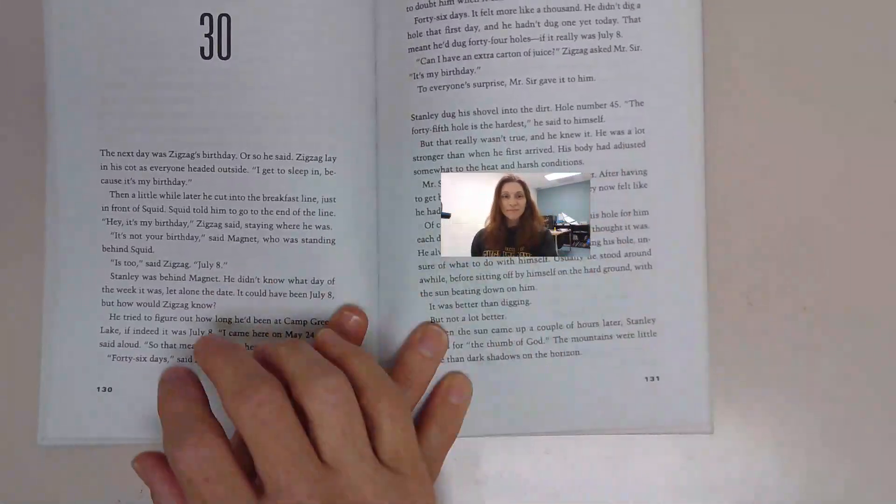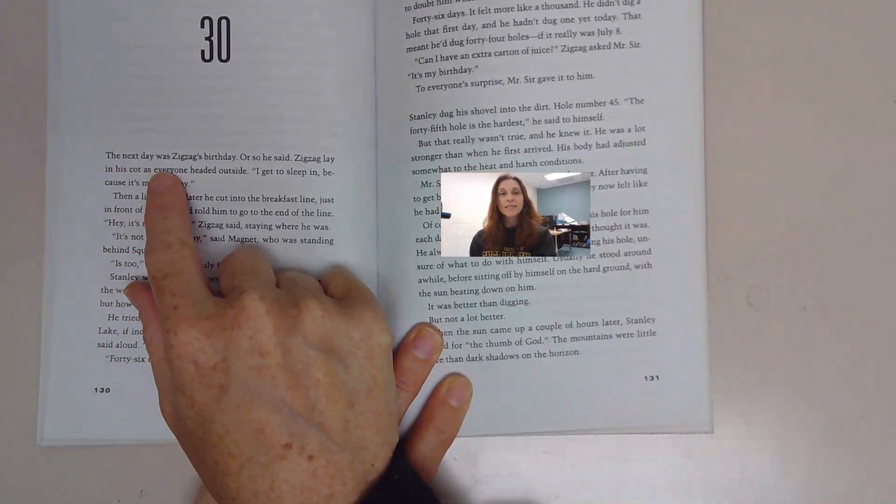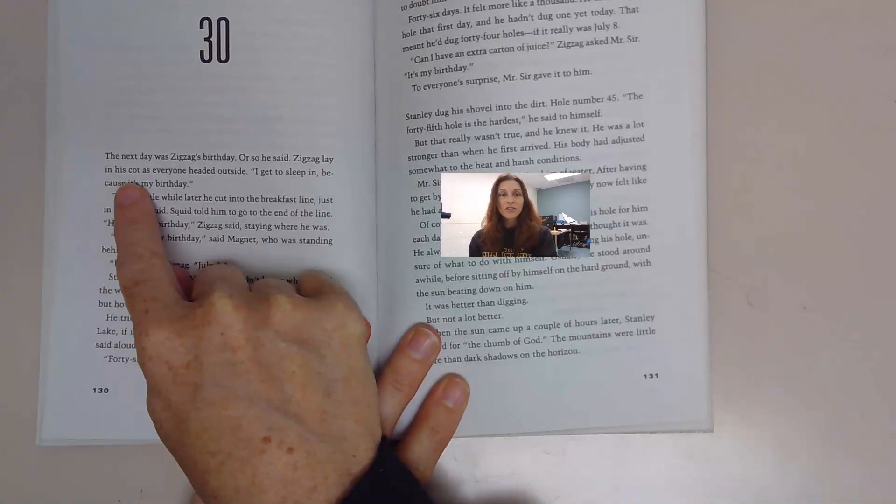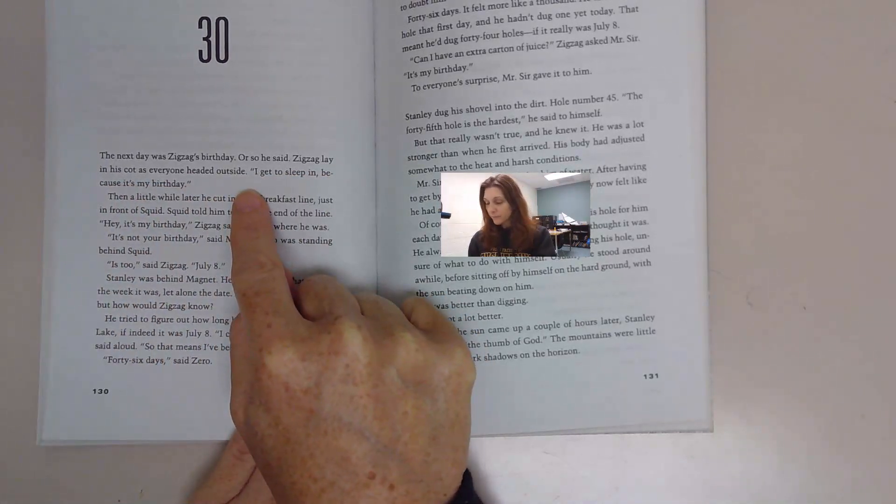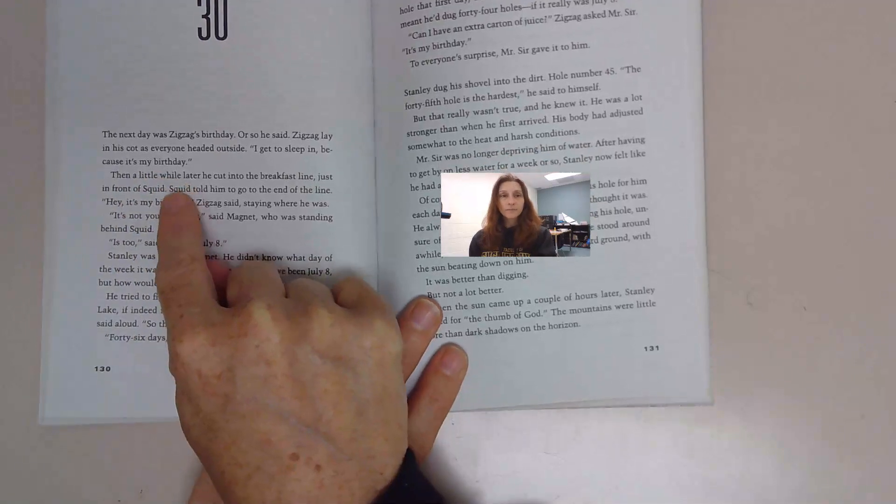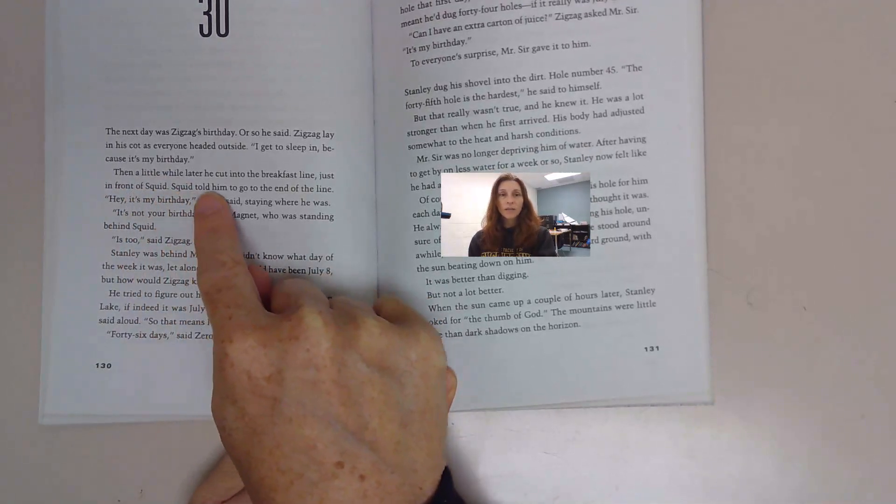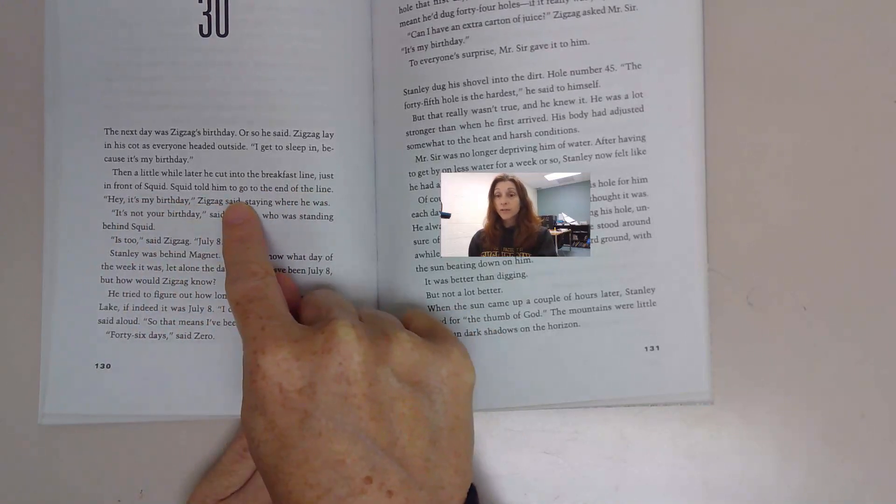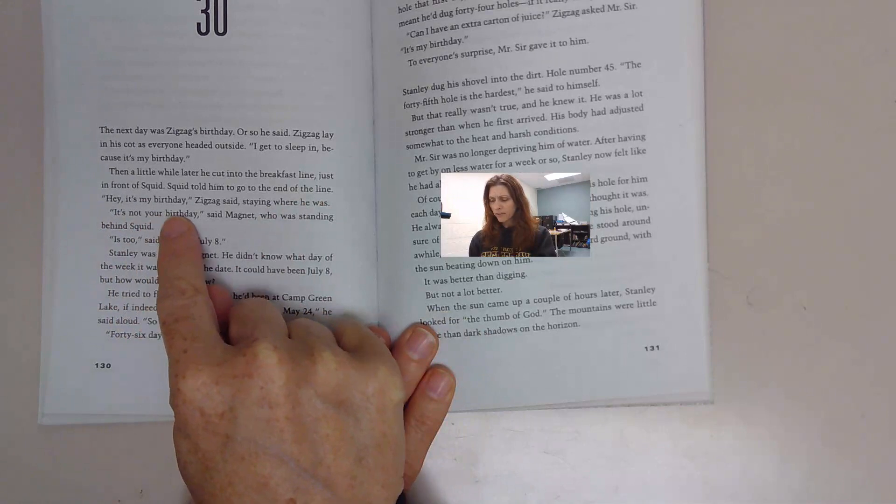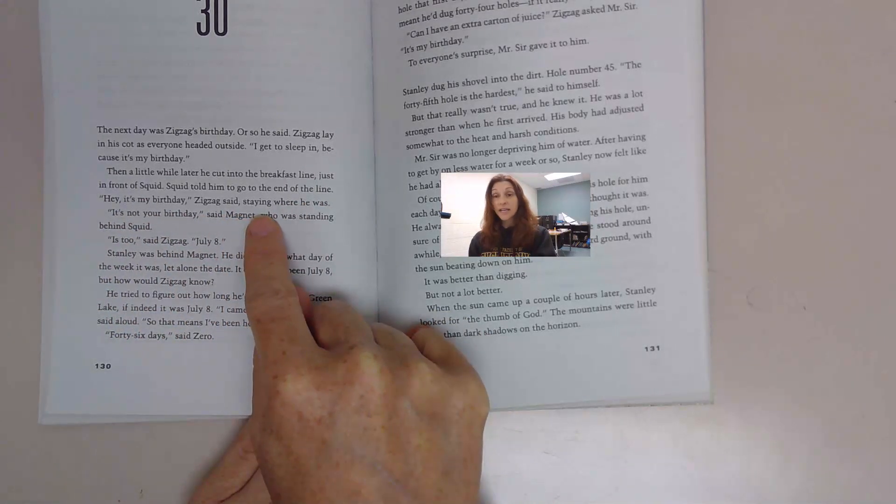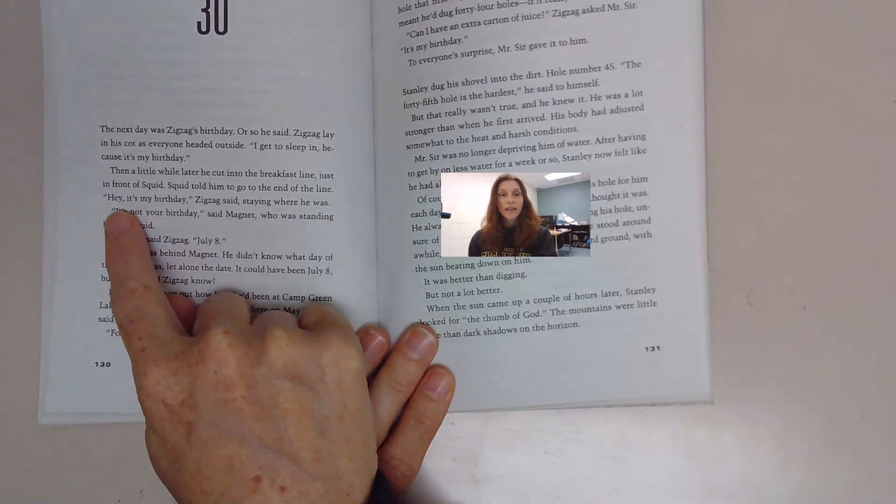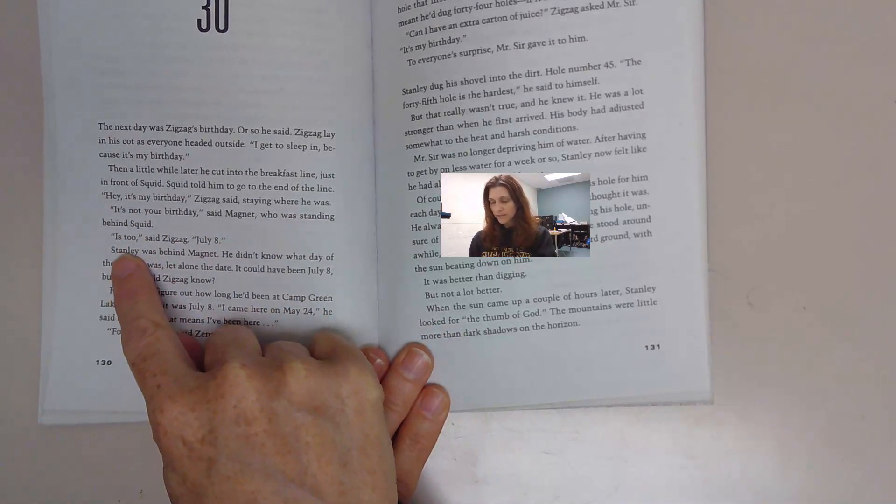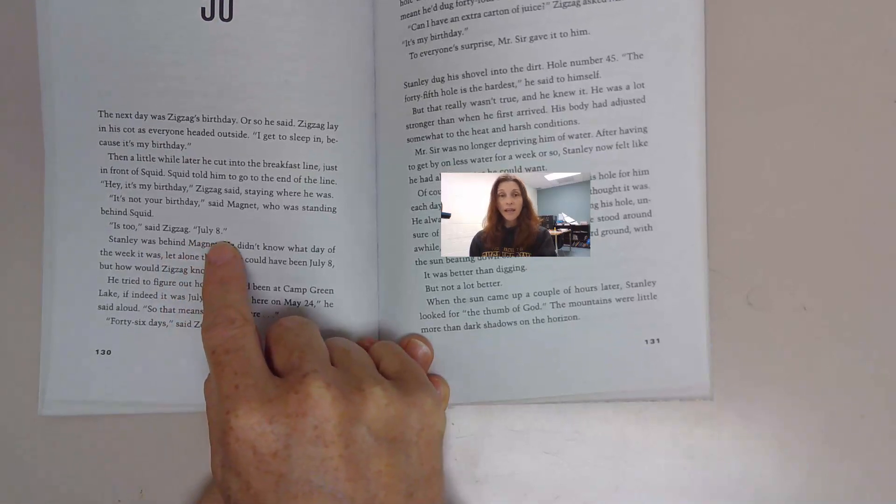Chapter 30. The next day was Zig Zag's birthday, or so he said. Zig Zag lay in his cot as everyone headed outside. I get to sleep in because it's my birthday. Then a little while later, he cut into the breakfast line just in front of Squid. Squid told him to go to the end of the line. Hey, it's my birthday, Zig Zag said. It's not your birthday, said Magnet. Is too, said Zig Zag, July 8th.